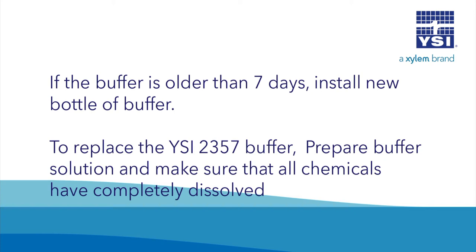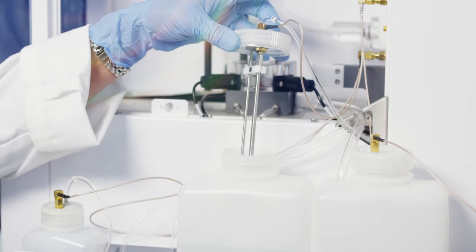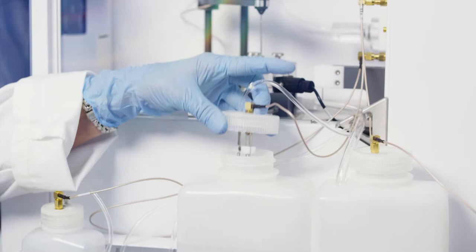To replace the YSI 2357 buffer, prepare buffer solution and make sure that all chemicals have completely dissolved. Unscrew and remove the lid from the old buffer bottle. Pour the freshly prepared buffer into the buffer bottle. Record the date of installation on the bottle of buffer. Place the bottle of buffer in the tray. Screw the lid and level sensor assembly back onto the buffer bottle.